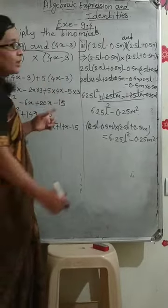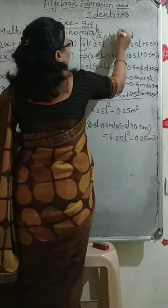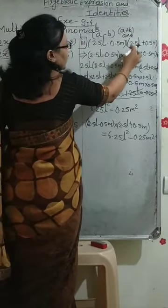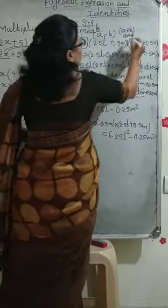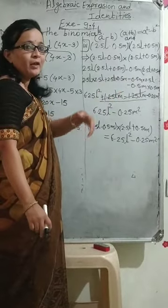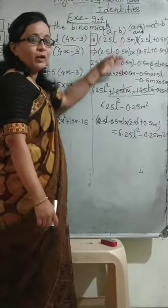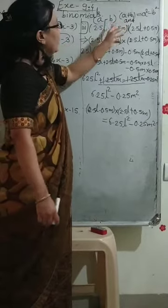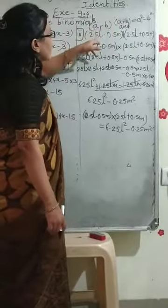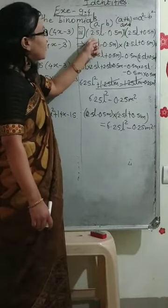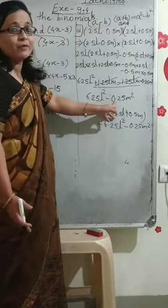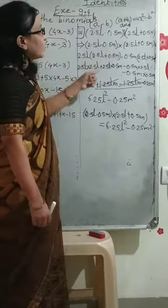One thing I want to explain here: there is one identity. That identity is (A − B)(A + B). If you observe, A and B are the same and only the minus and plus signs are different. That means it equals A² − B². In this example, A is 2.5L and B is 0.5M. So 2.5 squared is 6.25L², and 0.5 squared is 0.25, giving 0.25M². This identity we will use in the next exercise, but you can use it directly in any exam.